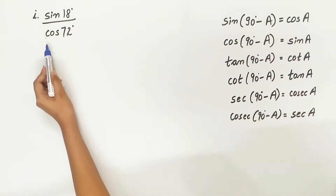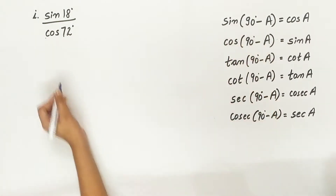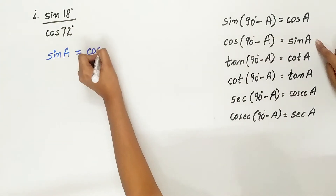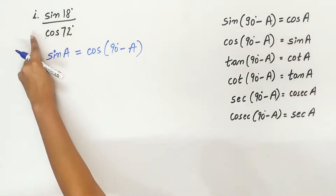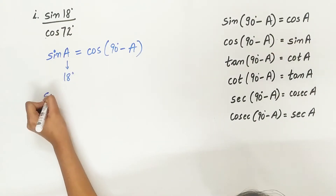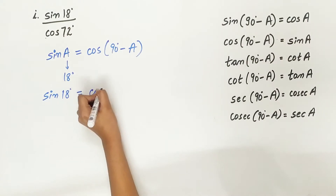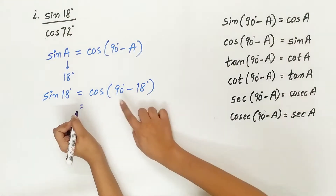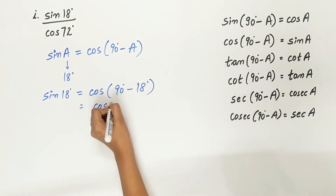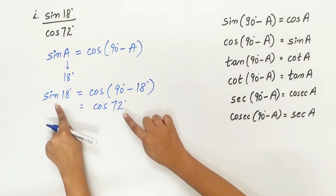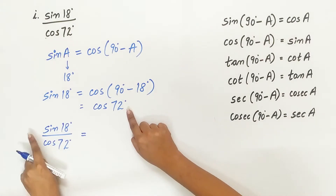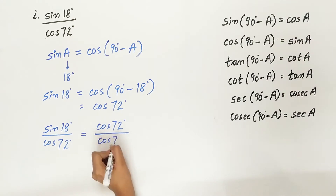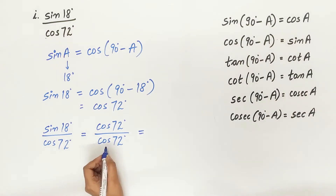First part is sin 18 degree divided by cos 72 degree. Remember, sin A is equal to cos 90 degree minus A. In this case, A is 18 degree. So sin 18 degree is equal to cos 90 degree minus 18 degree, which is cos 72 degree. Substituting cos 72 degree in place of sin 18 degree, it becomes cos 72 degree divided by cos 72 degree, which equals 1.